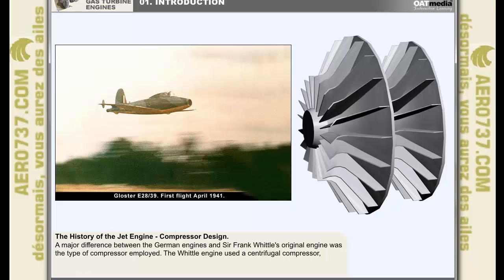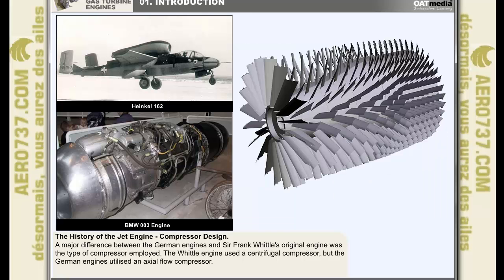One critical difference between the German engines used in the Heinkel and the later Messerschmitt 262, and those developed from Sir Frank Whittle's original engine, was the type of compressor employed. While the Whittle engine used a centrifugal compressor, similar to the example shown here, the German engines like the BMW 003 model used in the Heinkel 162 utilized an axial flow compressor, similar in design to the cutaway model shown.